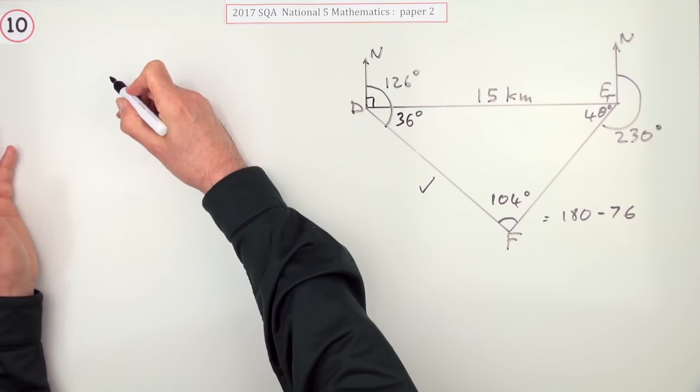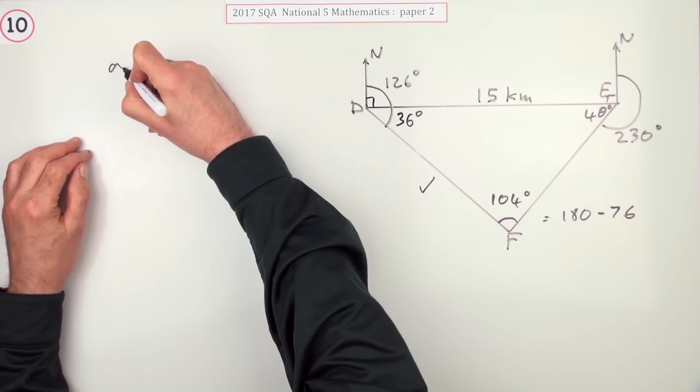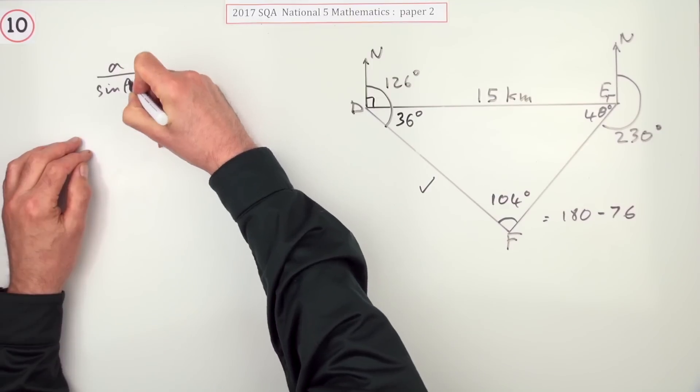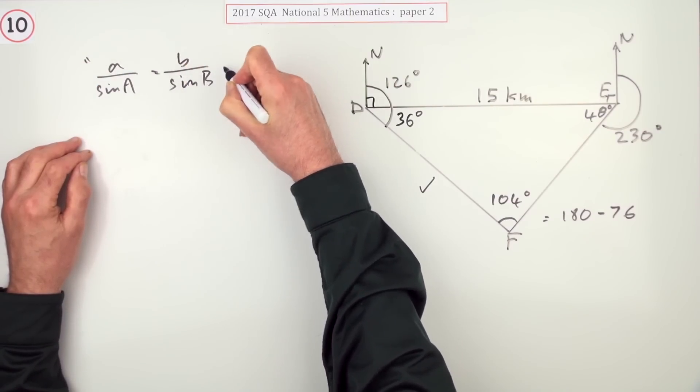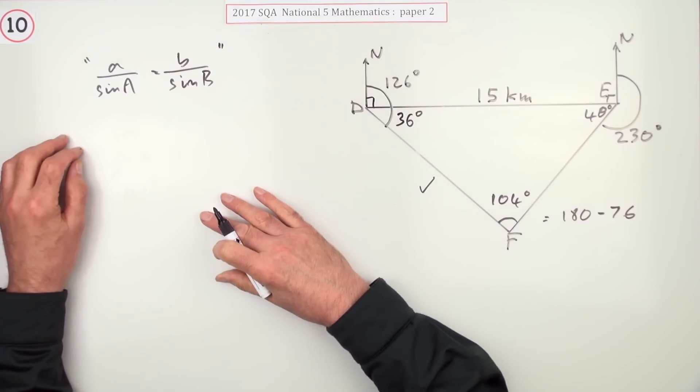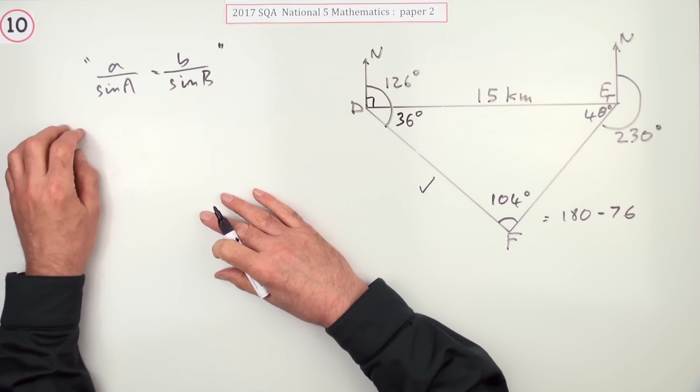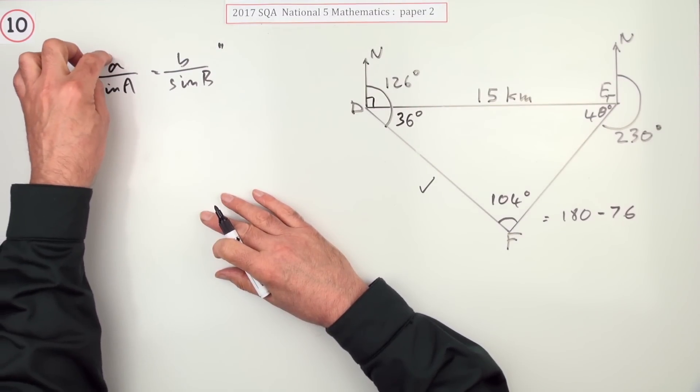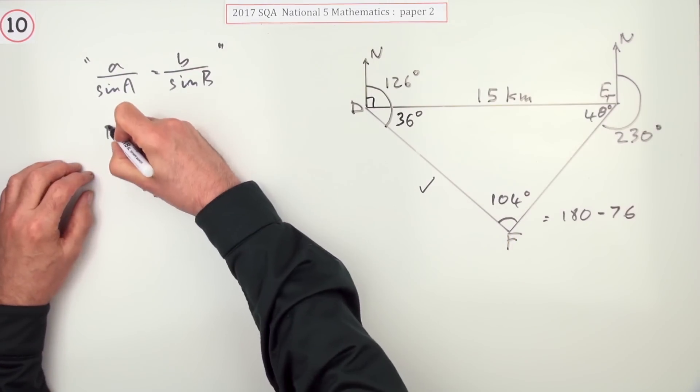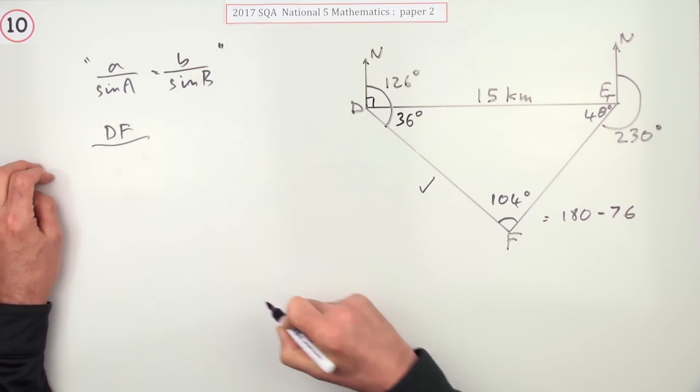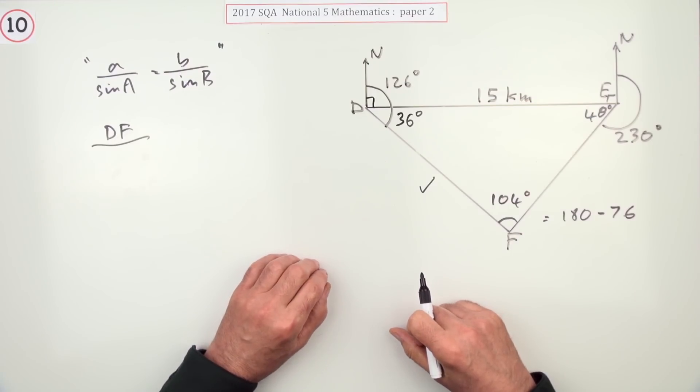Now you can write down, you can look at the formula sheet, write down the sine rule if you like, and it would go a over sine A is b over sine B and so on. You'll need two parts of it. But it's just configurational. The sides partner with the opposite angles. So if I want to work out this side, DF,